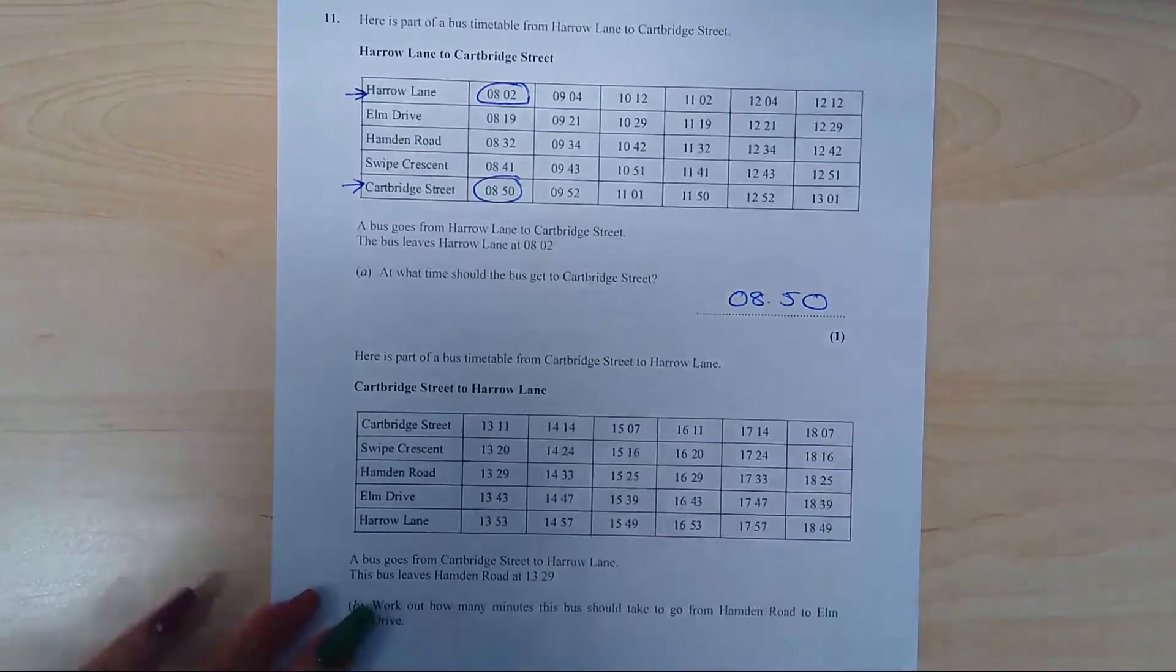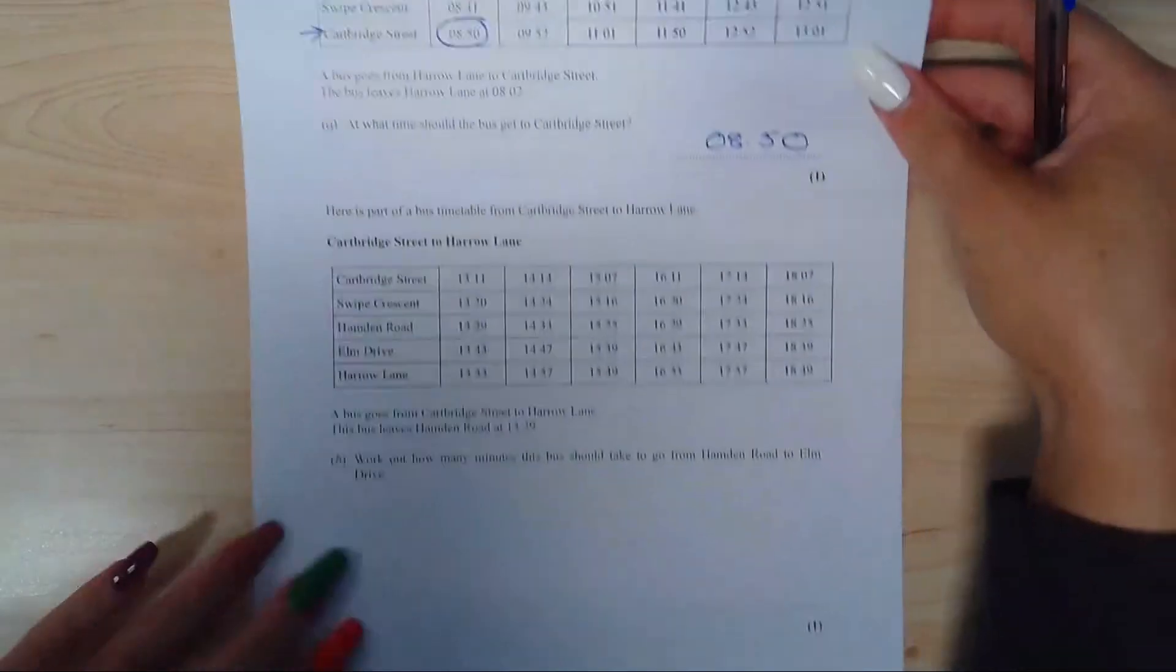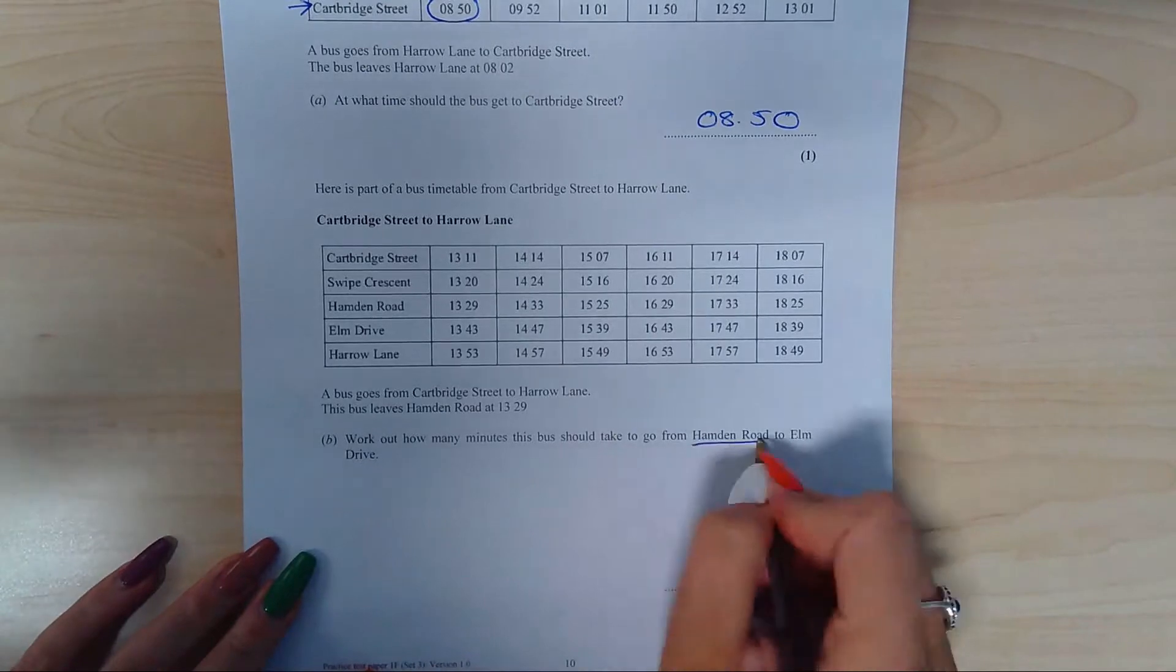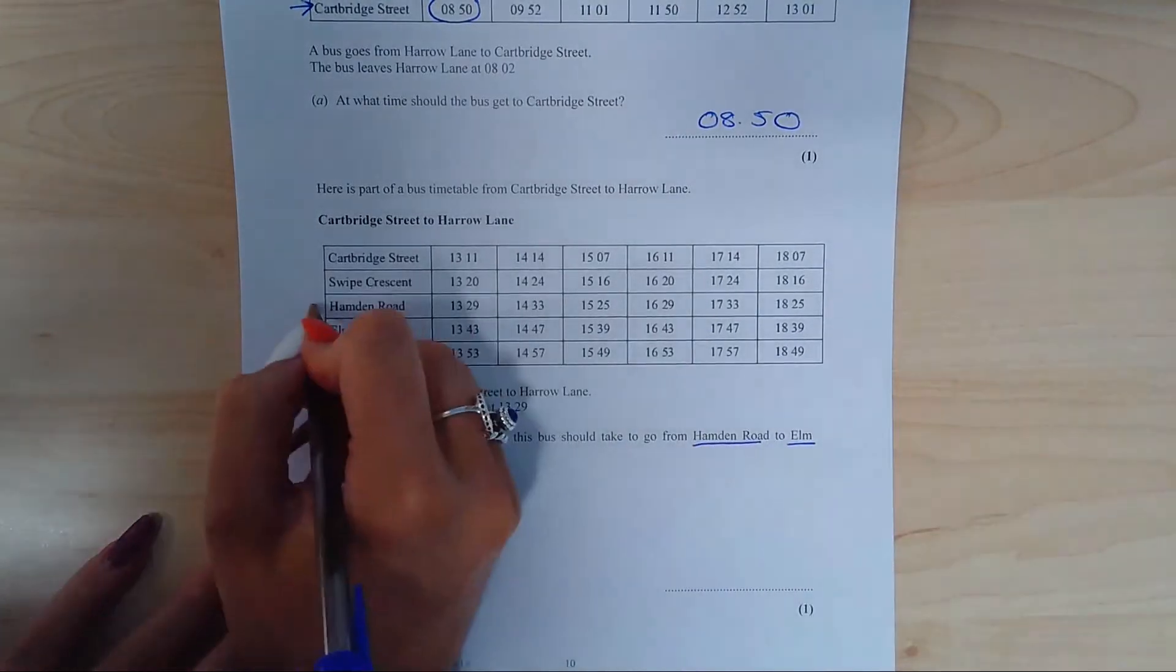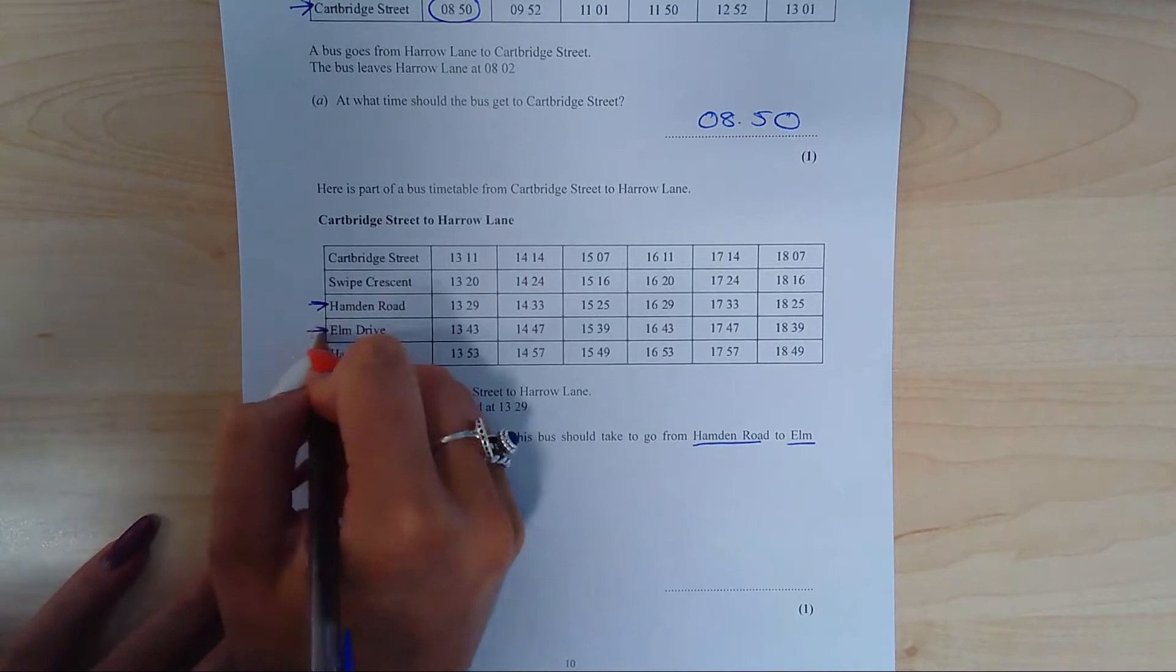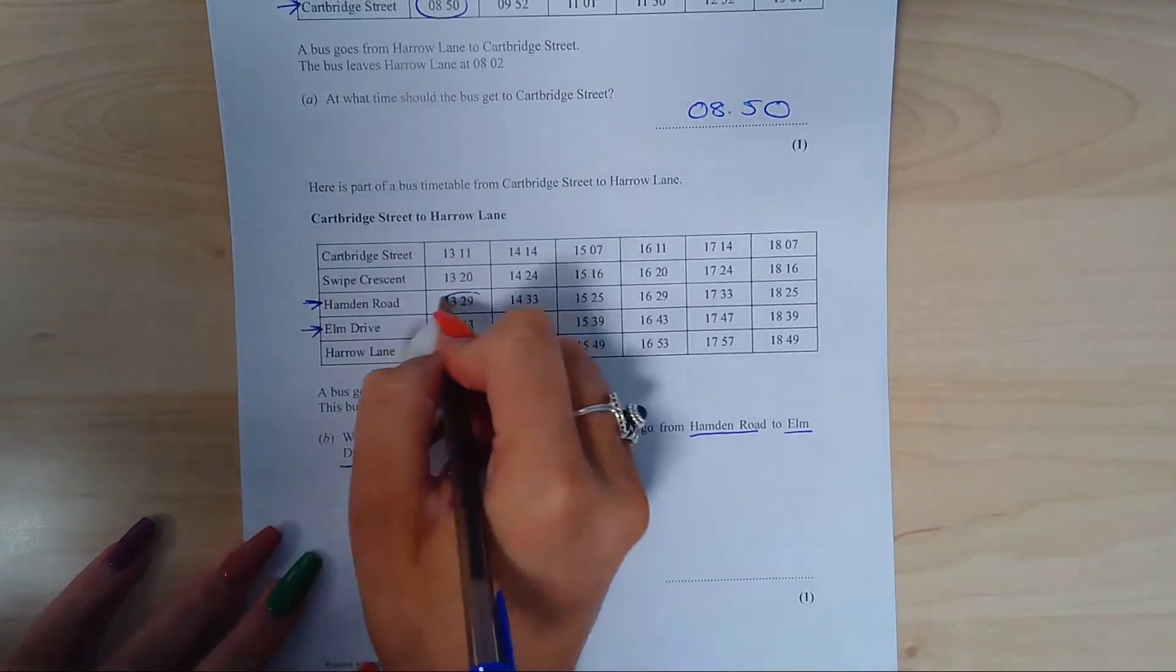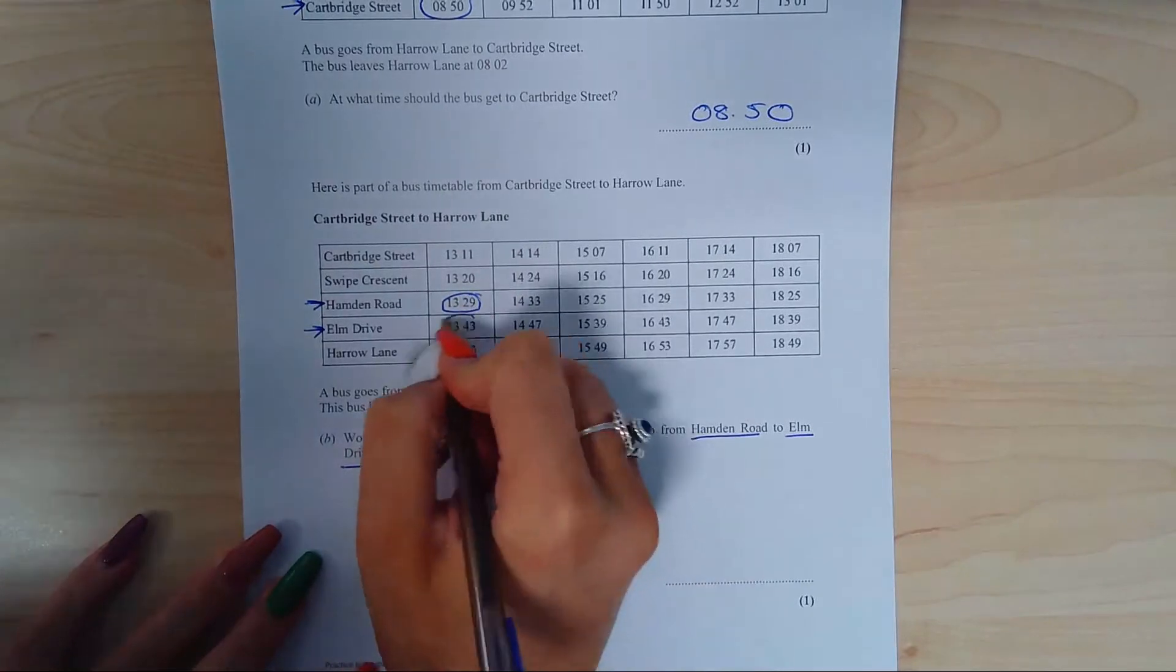Okay, here is another bus timetable. You have to use the timetable in order to work out how many minutes the bus should take from Hamden Road to Elms Drive. So looking at the table, Hamden Road to Elms Drive, leaving at 13:29. Finding 13:29, the bus arrives at 13:43.